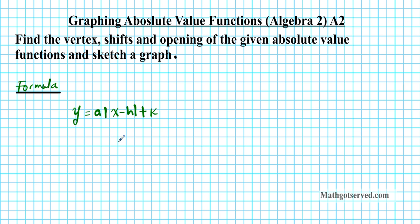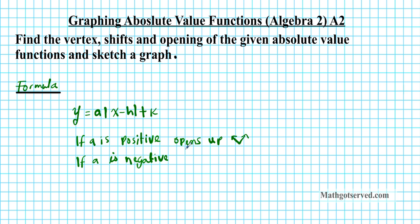So what do these components mean? Well, 'a' tells you the opening — whether it opens up or down. If a is positive, the absolute value function opens up, which means it looks like a V opening upwards. If a is negative, the graph of the absolute value function opens down and it looks like an upside-down V.